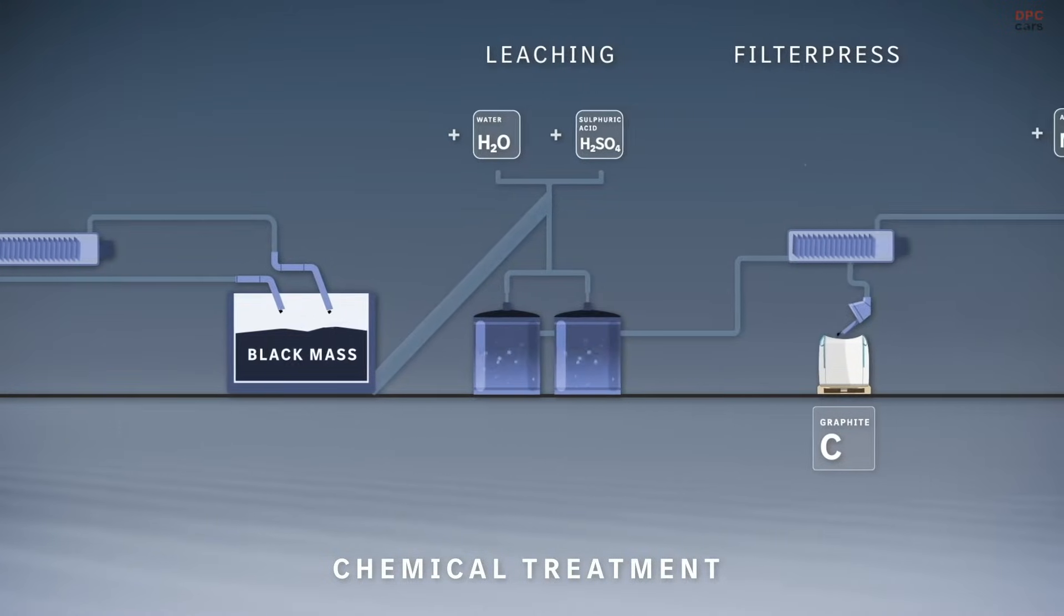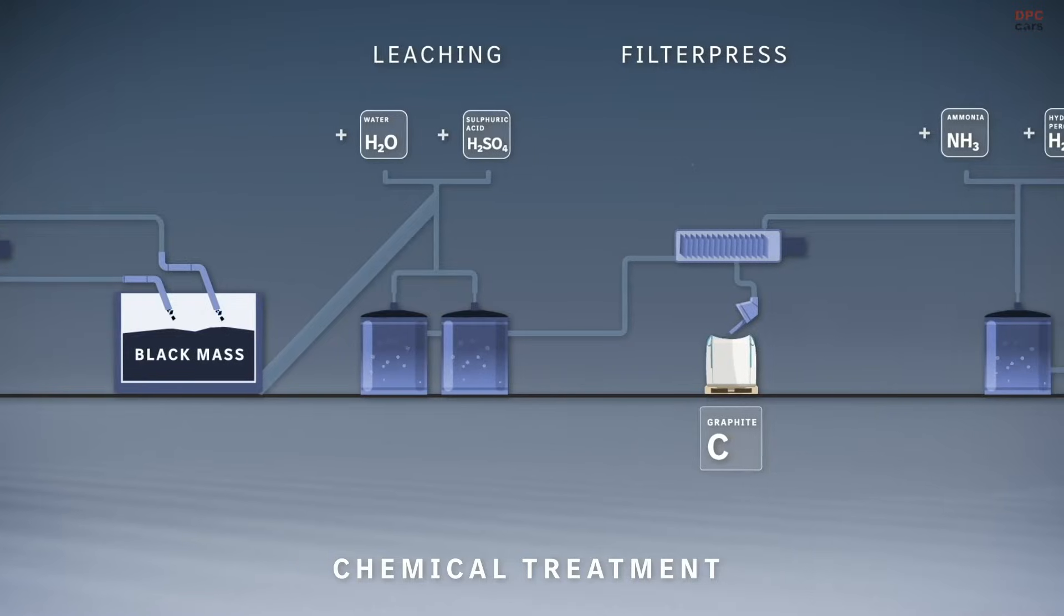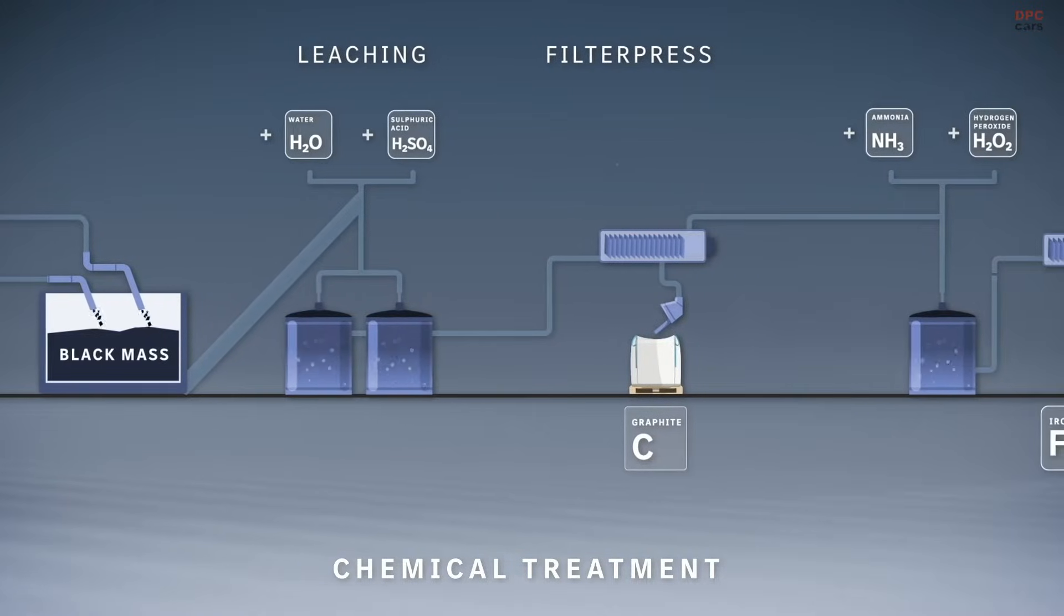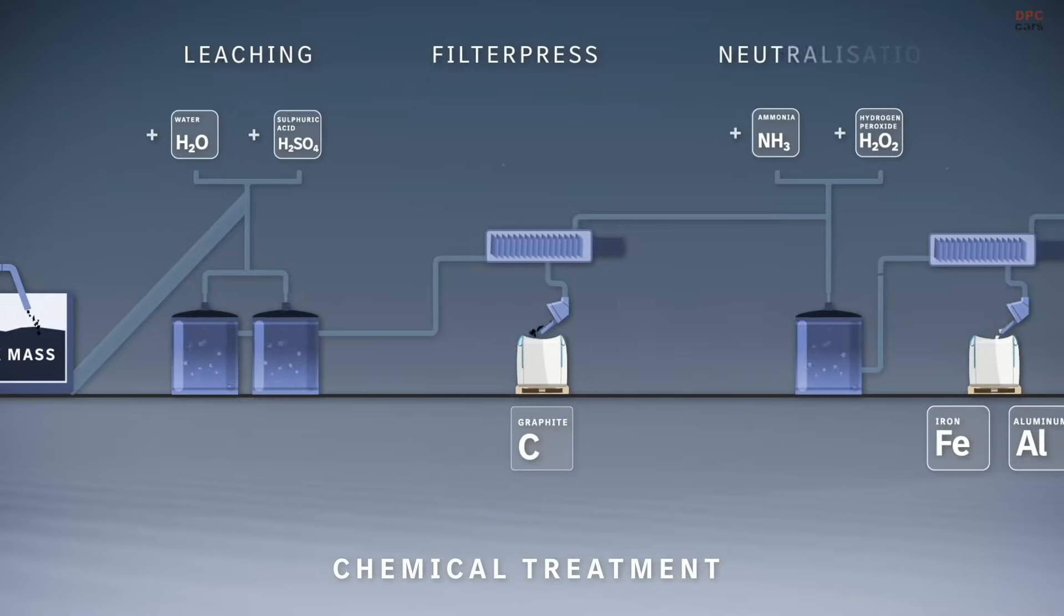Here, the metals are first dissolved into a liquid solution by leaching. The undissolved graphite is separated using filters and then packaged.